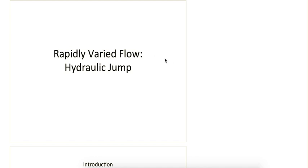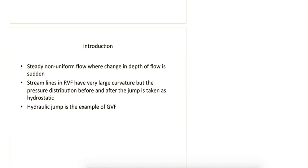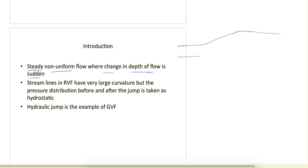Let's move to our next topic in open channel flow: rapidly varied flow. The main focus here is hydraulic jump, which is a very important topic. Rapidly varied flow occurs when the depth of flow changes in a very short length — the change in depth is sudden. It is a steady non-uniform flow, but the depth increases over just a few meters, whereas in gradually varied flow this distance was in kilometers.